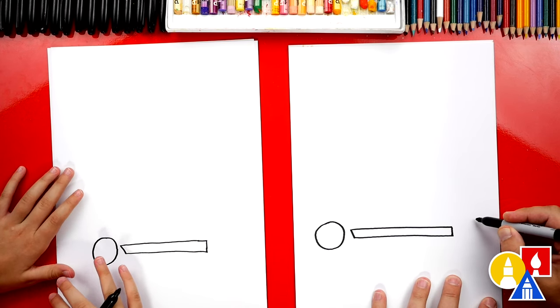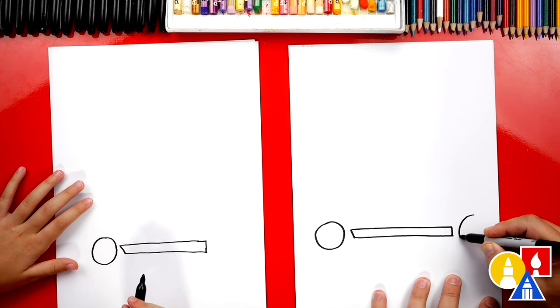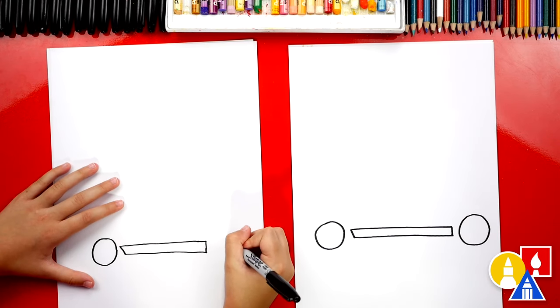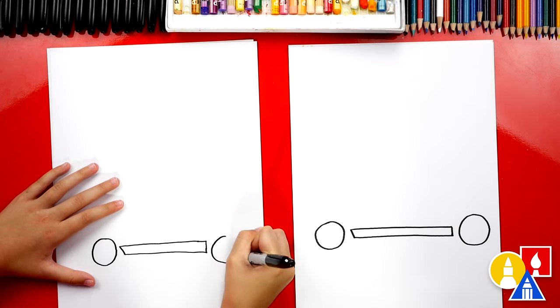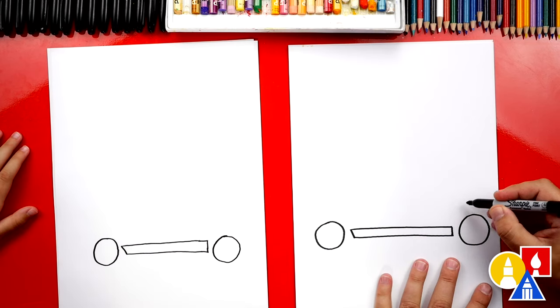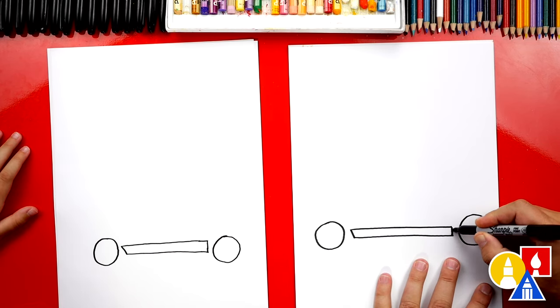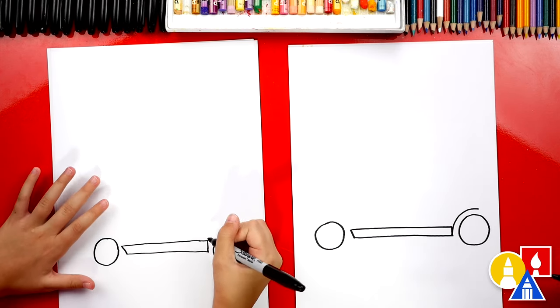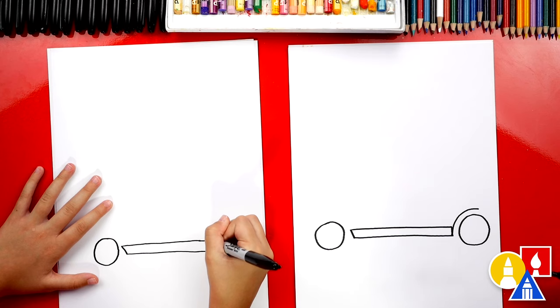Now we're gonna draw that same size circle over here. It's okay if they're a little different. Now we're gonna draw the back part over here that goes over the wheel. I think this is also the brakes, right? Yeah. It comes over. Push down on it and then it slows you down.